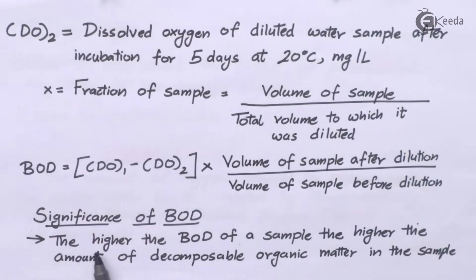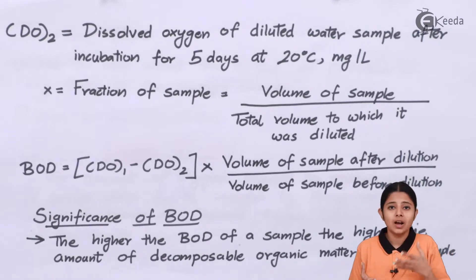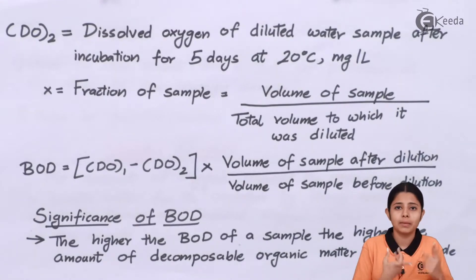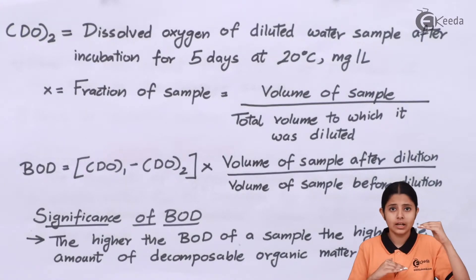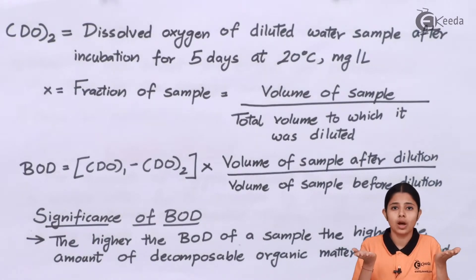Significance of BOD: the higher the BOD of a sample, the higher the amount of decomposable organic matter in the sample. If BOD is higher, the amount of oxygen used up is higher, and that oxygen is being used by organic matter and decomposable bacteria. If the amount of oxygen used up is higher, the amount of organic matter is higher — meaning if BOD is higher, the level of pollution in that water is also higher.